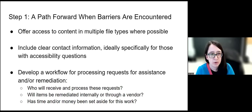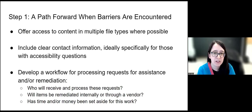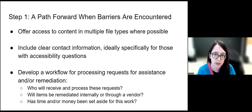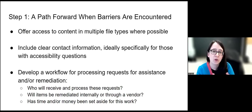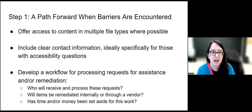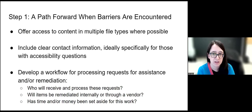Step one is building a path forward when barriers are encountered. Even if you think you can achieve 100% accessibility for your materials, the reality is that probably isn't the case. Assistive technologies are changing, the internet is changing, and each person's needs are really unique. A great way to focus your initial work is to assume that, as hard as you might try to make things accessible, someone may encounter a barrier — and ask: am I making sure there's a next step they can take to get access?